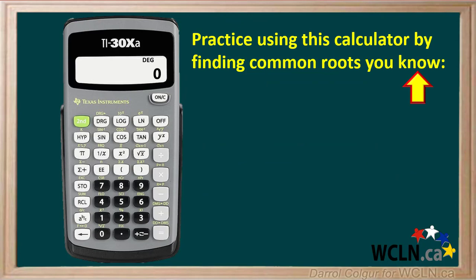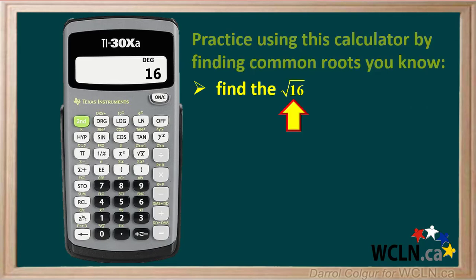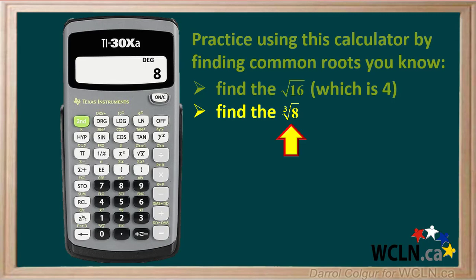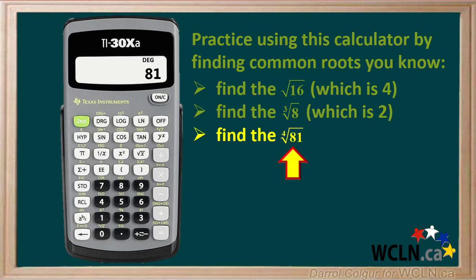It's a good idea to practice using this calculator by finding common roots that you already know and seeing if you get the correct answers. For example, use the procedure given to find the square root of 16, and you should get the answer 4. Next, try finding the cube root of 8, and you should get the answer 2. Try finding the 4th root of 81, which you know should be equal to 3.